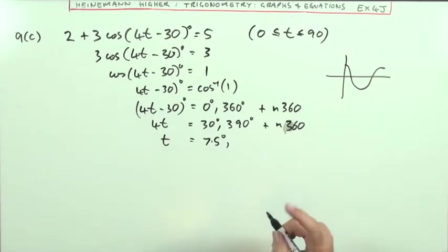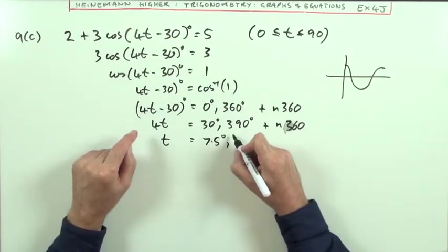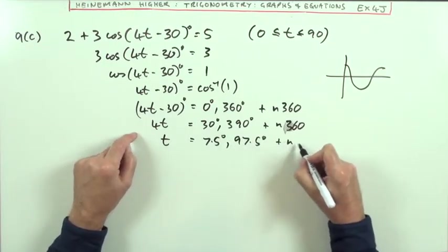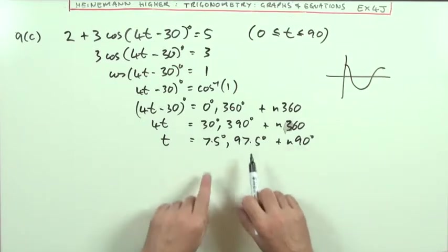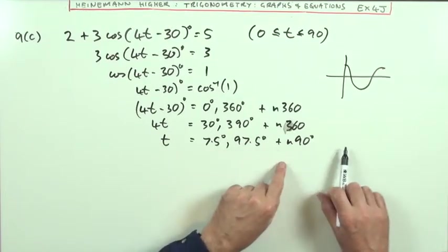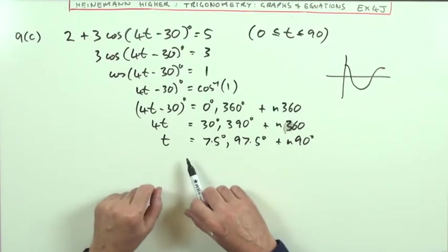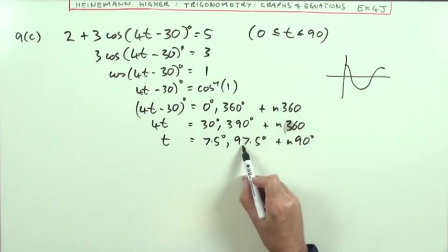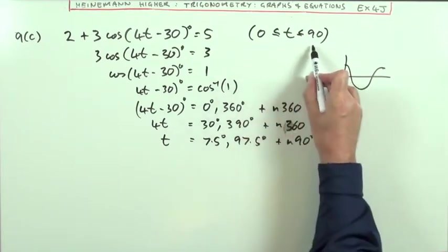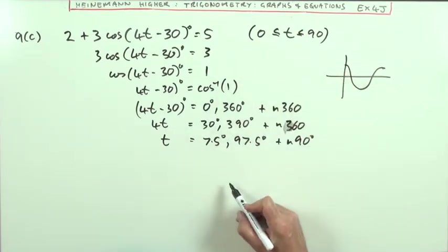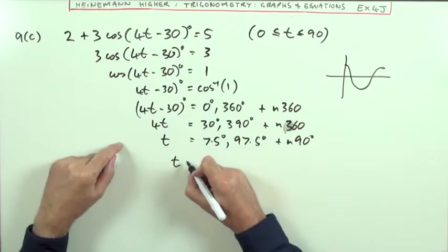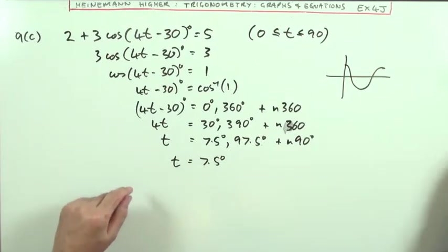Dividing by 4 gives 7.5 degrees and 97.5 degrees, plus n90. I can add or subtract 90s to remain within the window. Taking 90 off the second gives 7.5 again, but between 0 and 90 I've only got 7.5. That one's outside the window, so the only answer is 7.5 degrees.